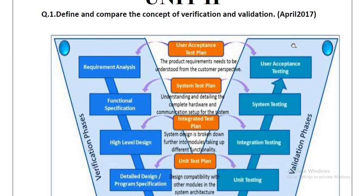So if requirement analysis is proper in the verification phase, then in the validation phase — at user acceptance testing — the user will check whether the software meets those previously defined requirements: whether the software provides the specific required capability or not. They will also check whether the software is easy to use and not overly complicated for users. So if requirement analysis is correct, user acceptance testing will pass. This is how we compare verification and validation.